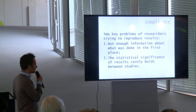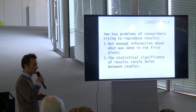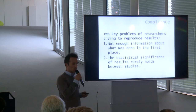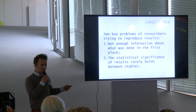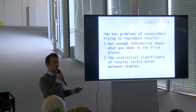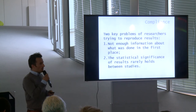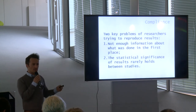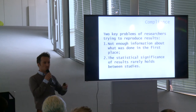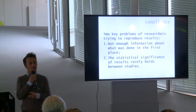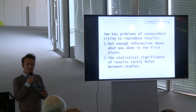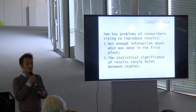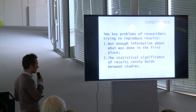The second problem is that the statistical significance of results rarely holds between studies. It is very common that an original study claims its results are positive and statistically significant — something that researchers love to report. But researchers who try to replicate those studies do not necessarily question the direction or magnitude of the effects; very often what they cannot replicate is the p-value. They find the effect is no longer statistically significant in the replicated study.